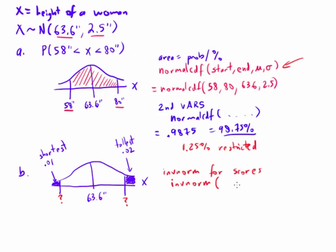And the first one's really important. The first number is the area to the left of the score that you want to find. It's how much area is to the left. And then it's mu comma sigma.